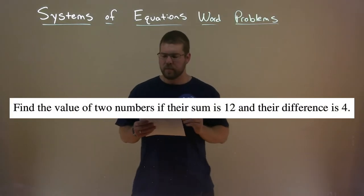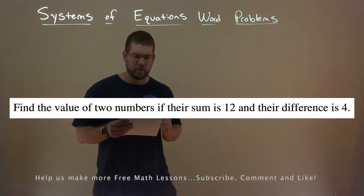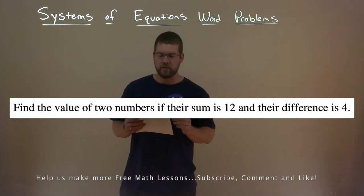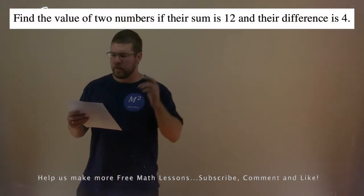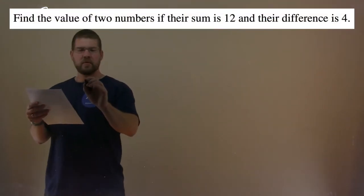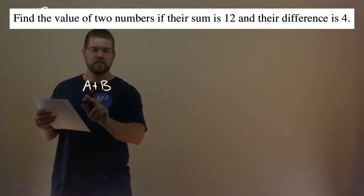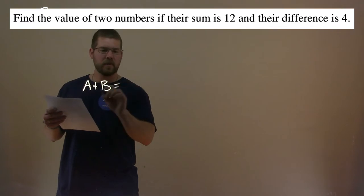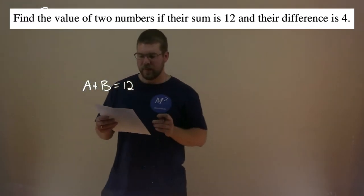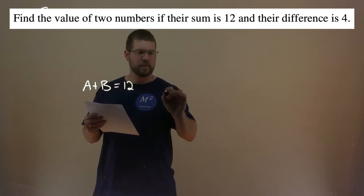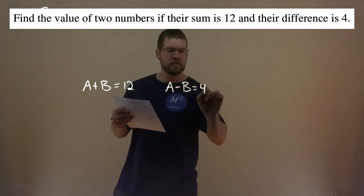We're given this problem: find the value of two numbers if their sum is 12 and their difference is 4. So we have our two numbers. They tell us their sum, so let's call the numbers A and B. A plus B, their sum, is 12. They also tell us that their difference is 4, that A minus B is equal to 4.